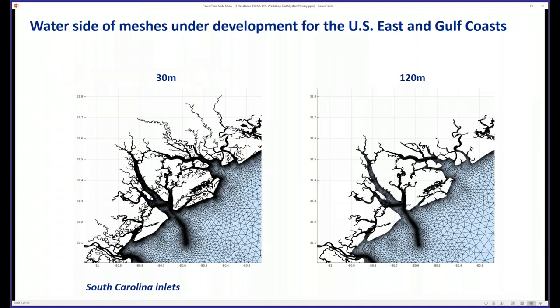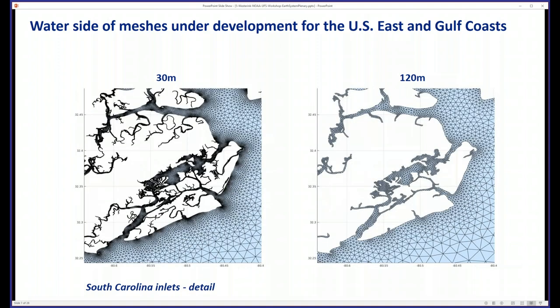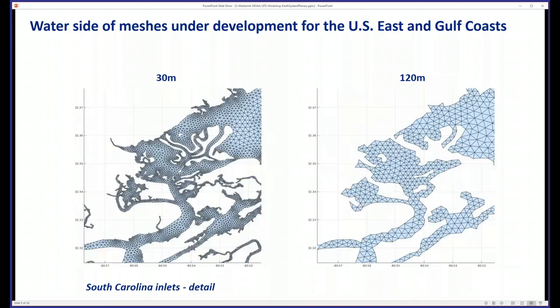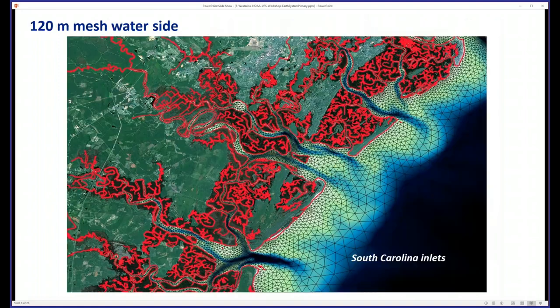Some typical examples: South Carolina inlets — the left side is a 30-meter rendition, 120 to the right. Zooming in a little more, you can see much more resolution, and zooming in even further, you capture an enormous amount of this coastal floodplain which is subject to flooding, especially when these things are lying in low-lying areas.